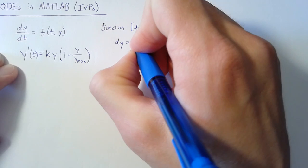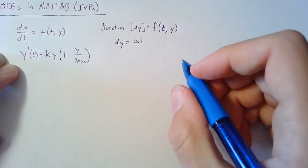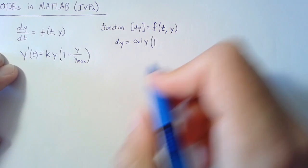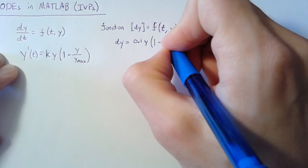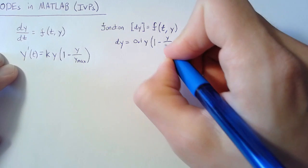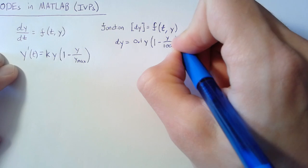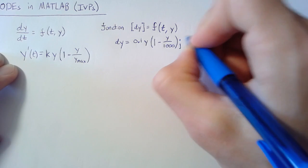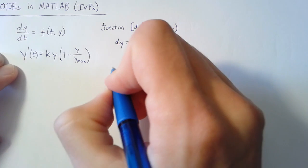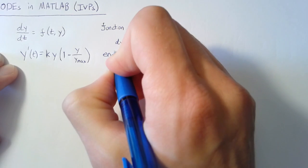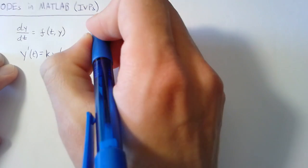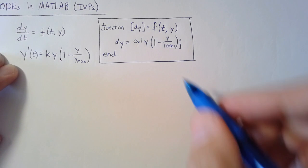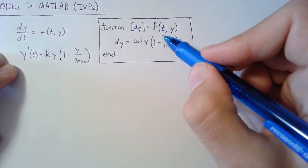We're going to set this to 0.1 as our population growth rate, multiply that by our population, and then add in this logistic term, which is 1 minus y over 1000 (our maximum population). We want to suppress this because we don't want to see dy every time the function evaluates. Then we end our function, and save this as f.m so that MATLAB can find it.